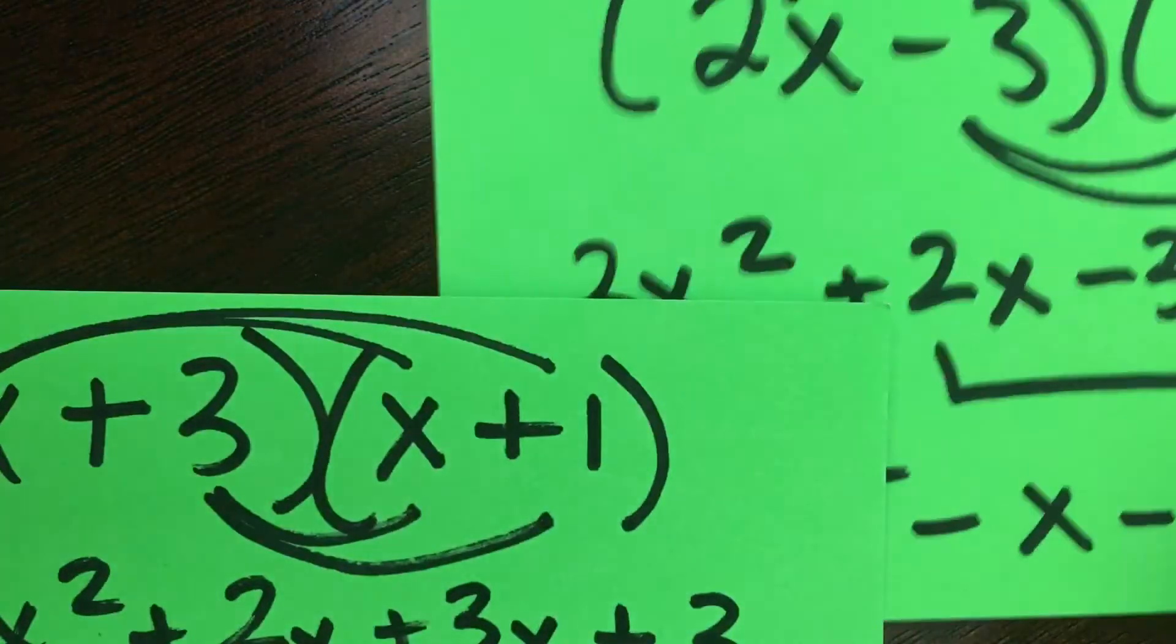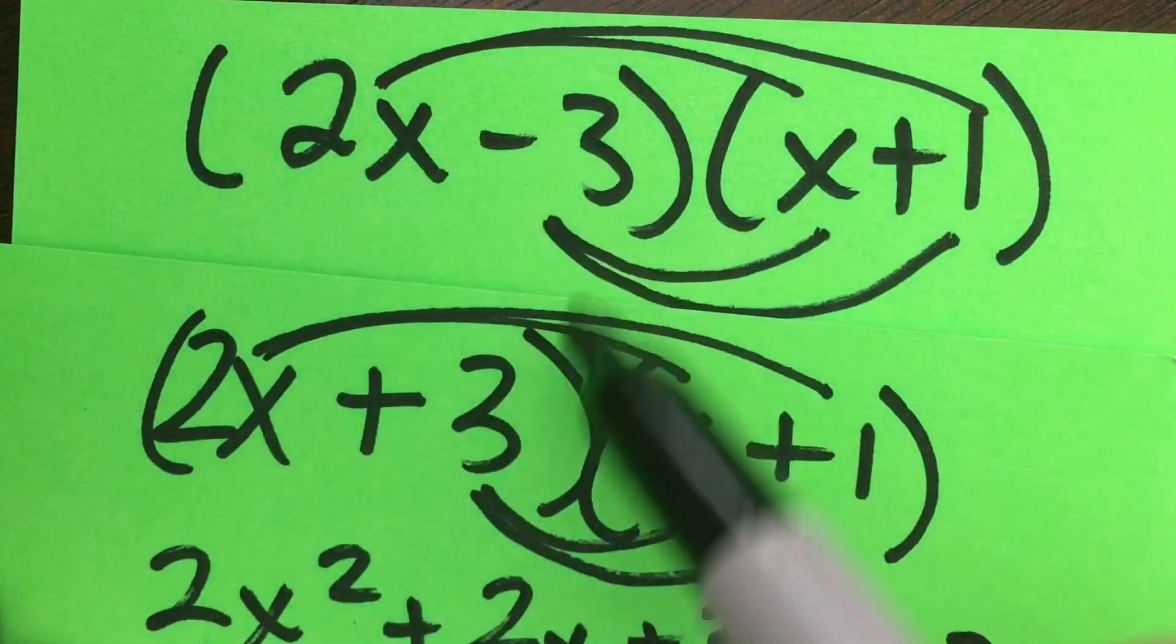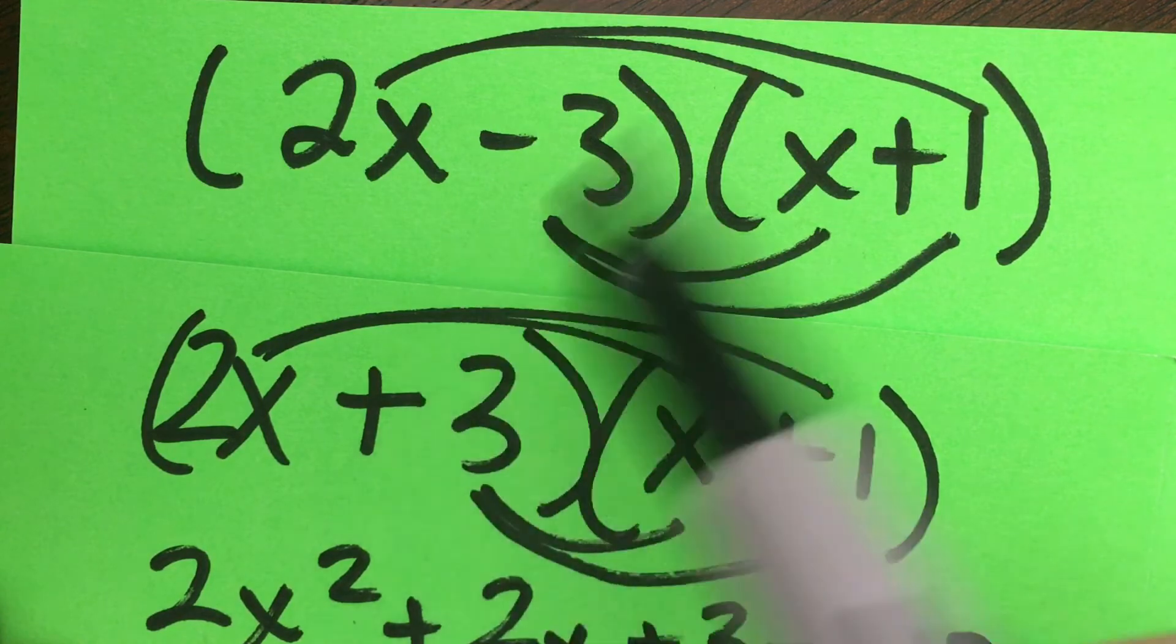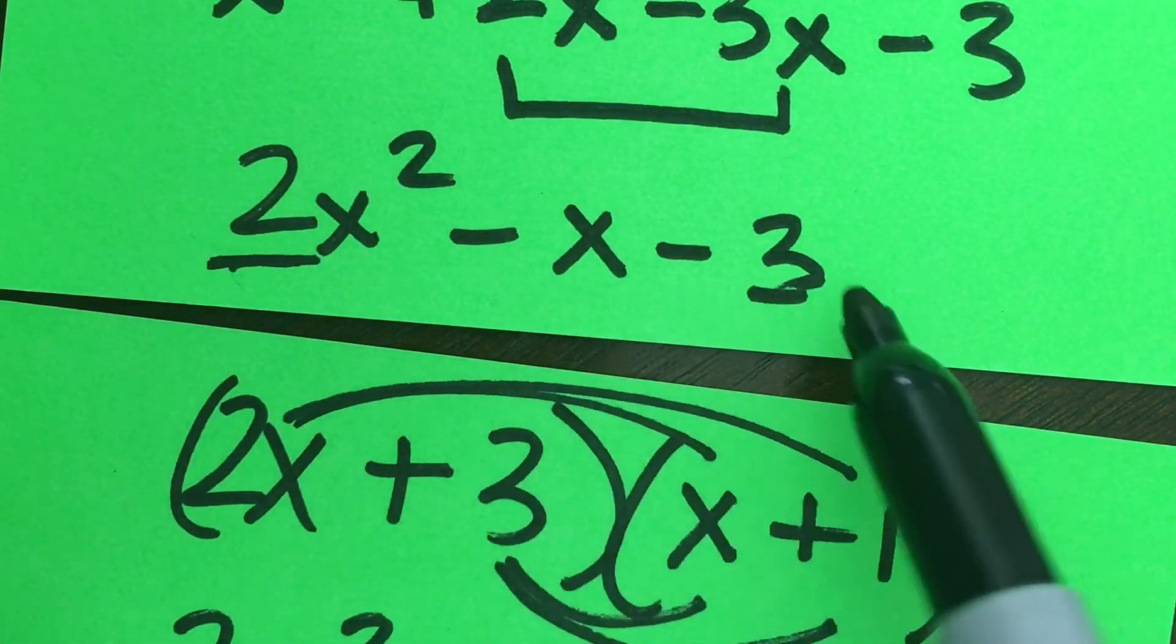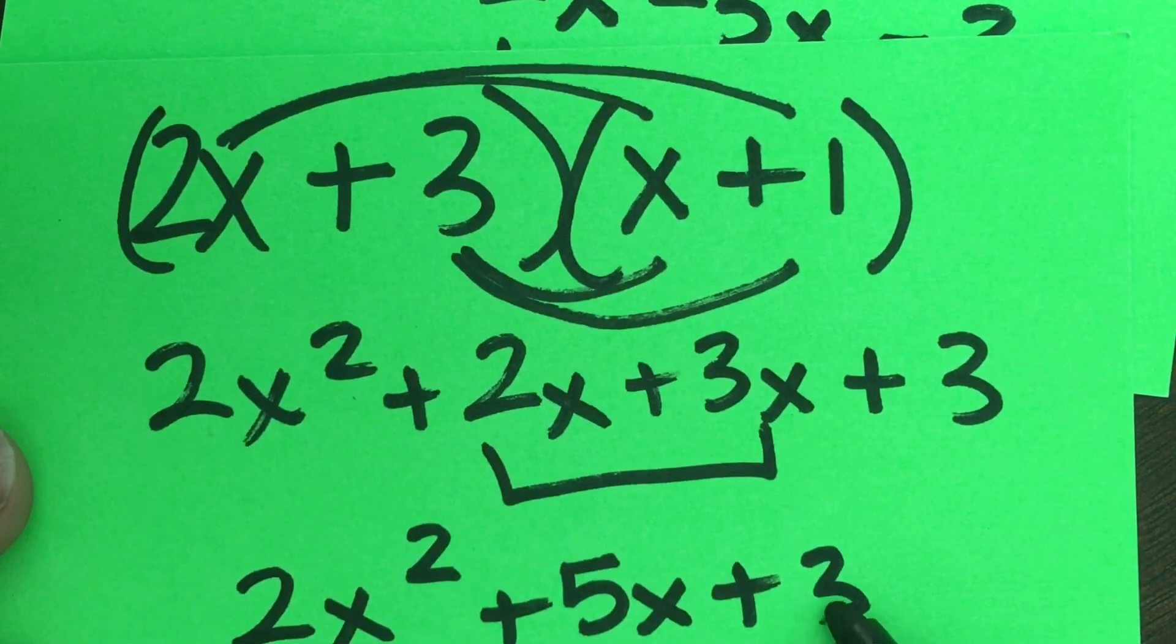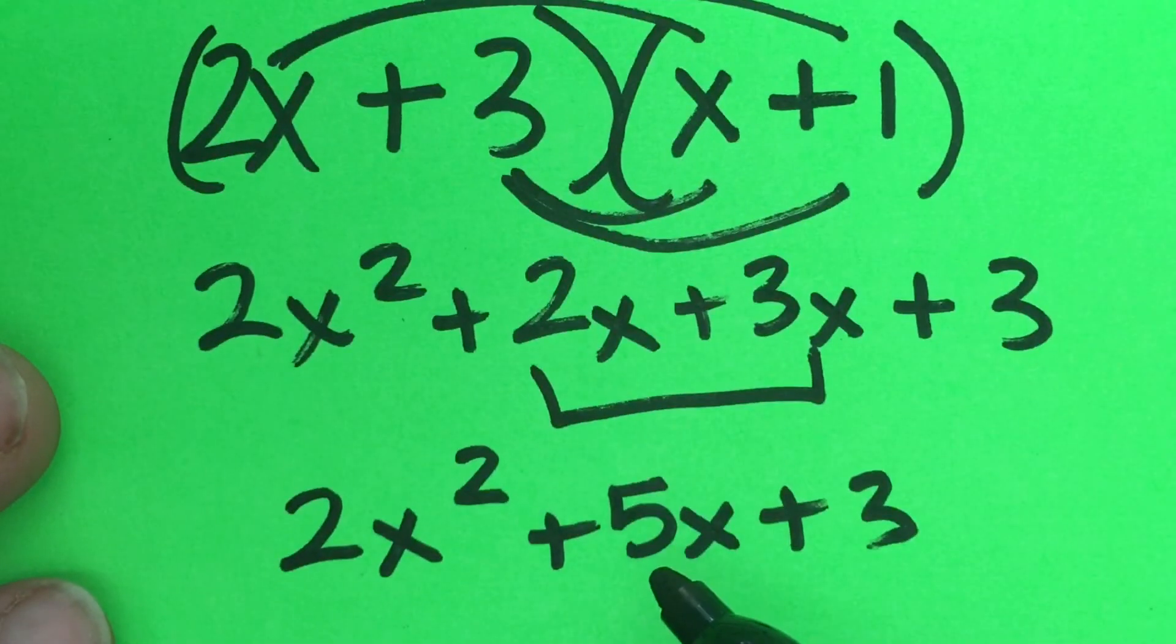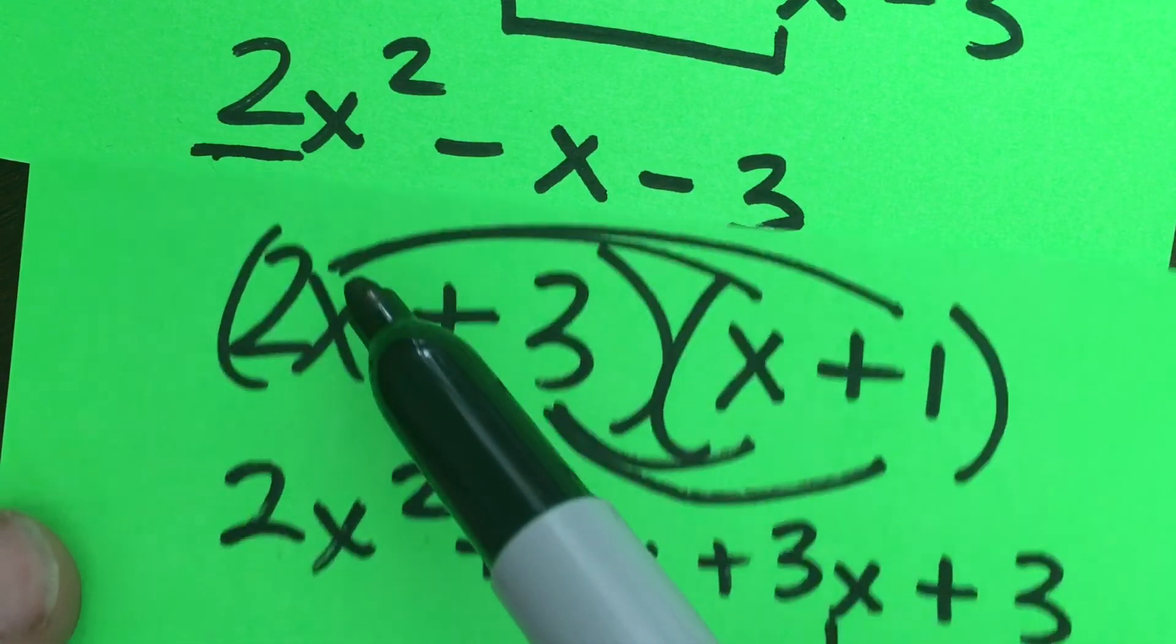Notice these two problems started out with the same elements in each, but what was different was the sign in the first binomial grouping. When you compare final answers, this one ended in a negative 3, whereas here we ended in a positive 3. Up here, the middle term was a negative 1, and the bottom term down here was 5x, but they both ended with 2x squared.